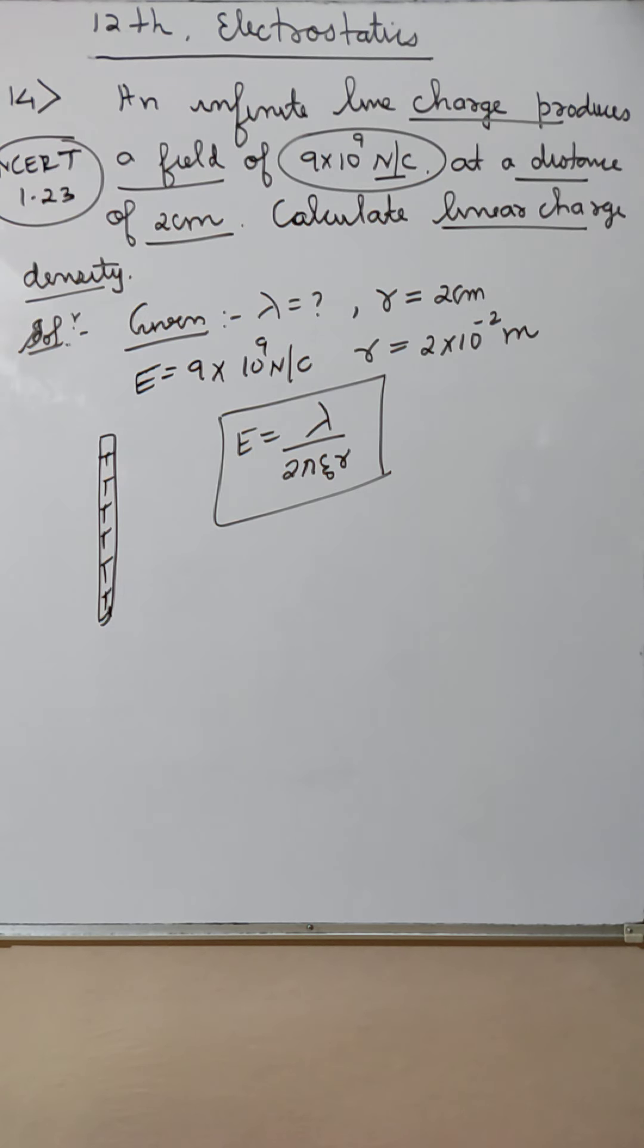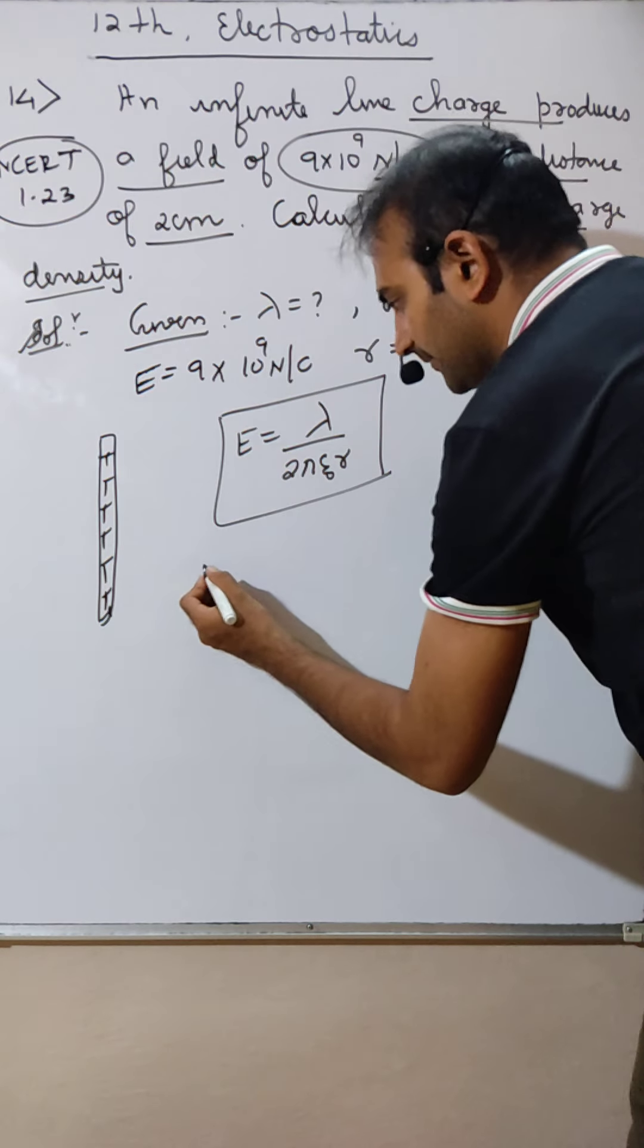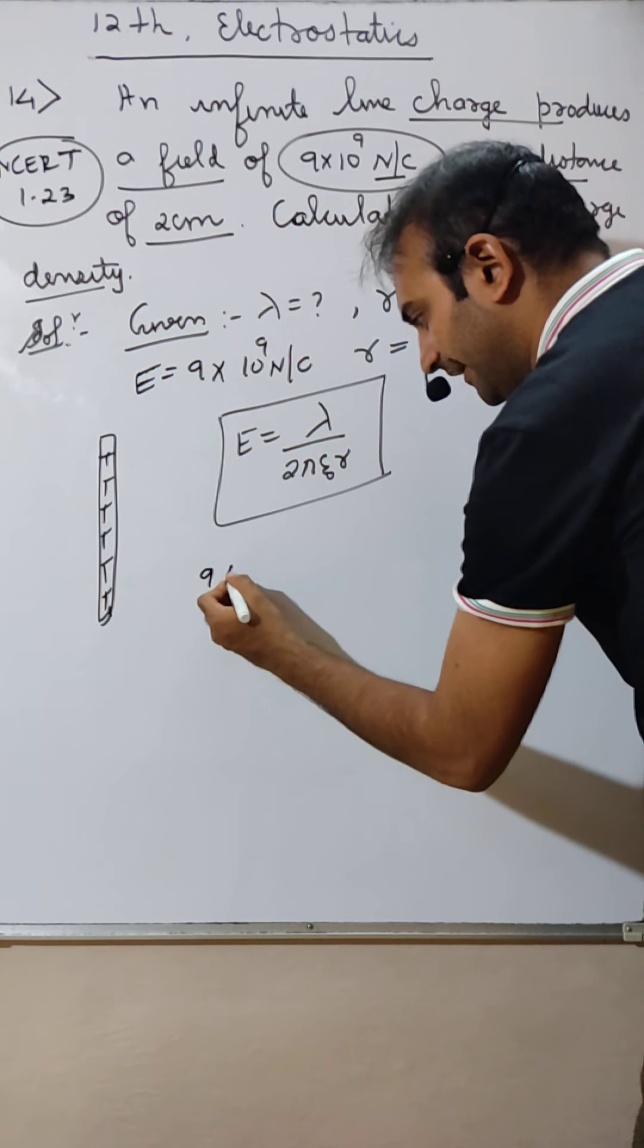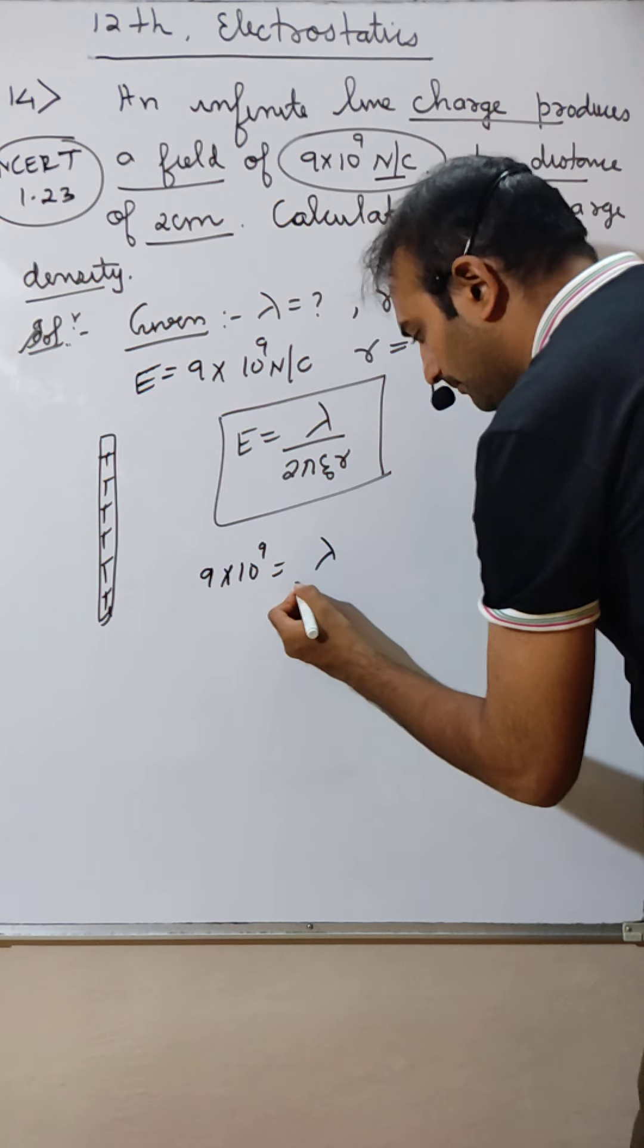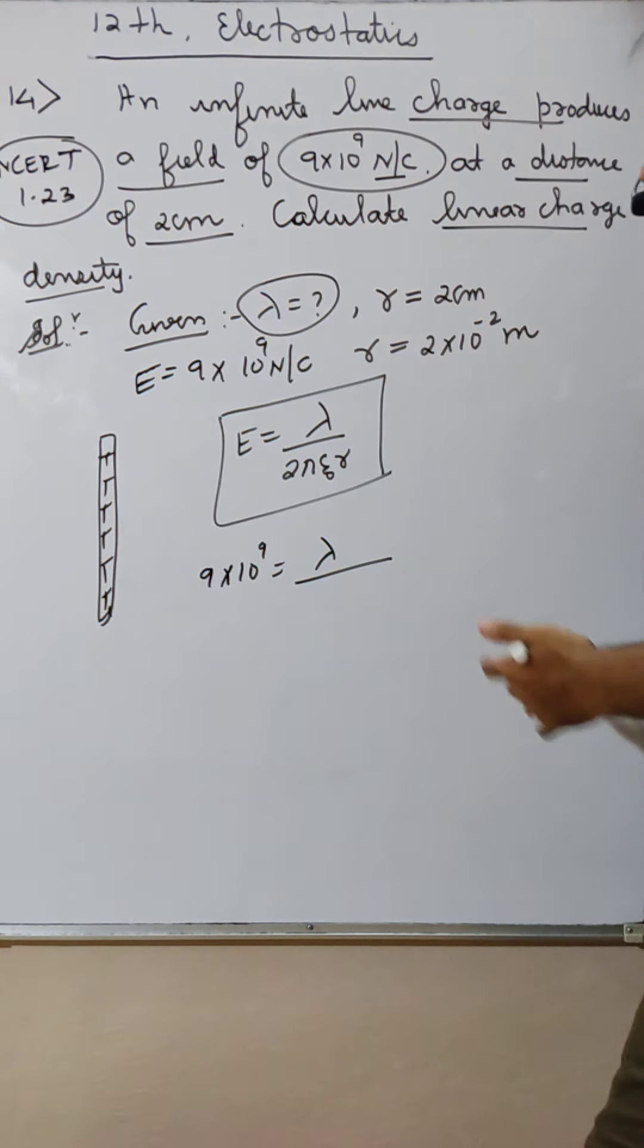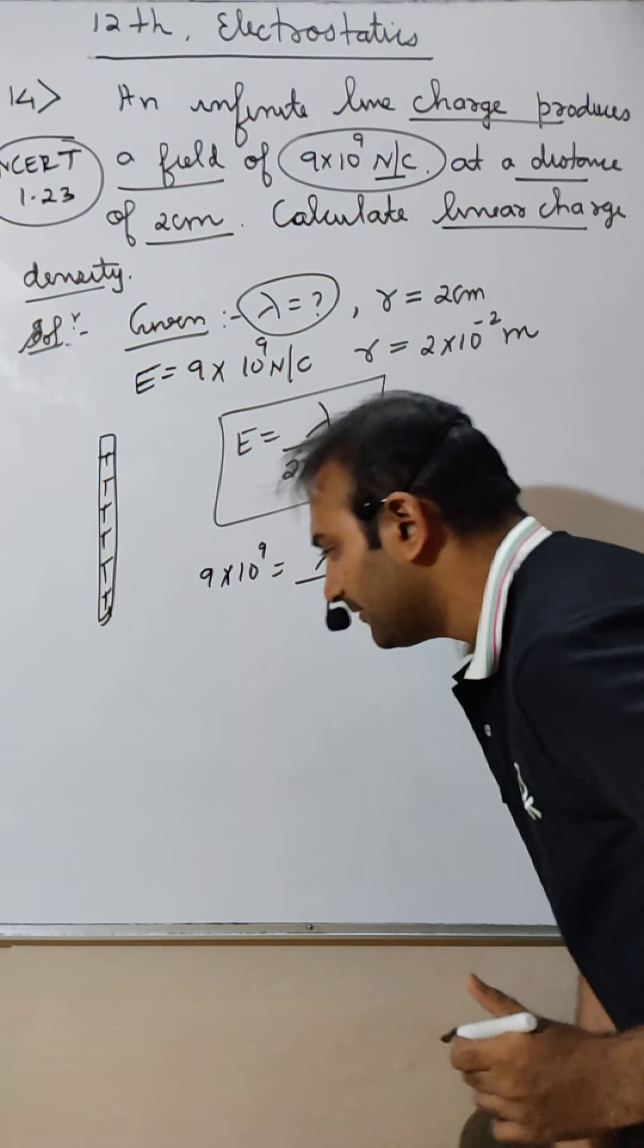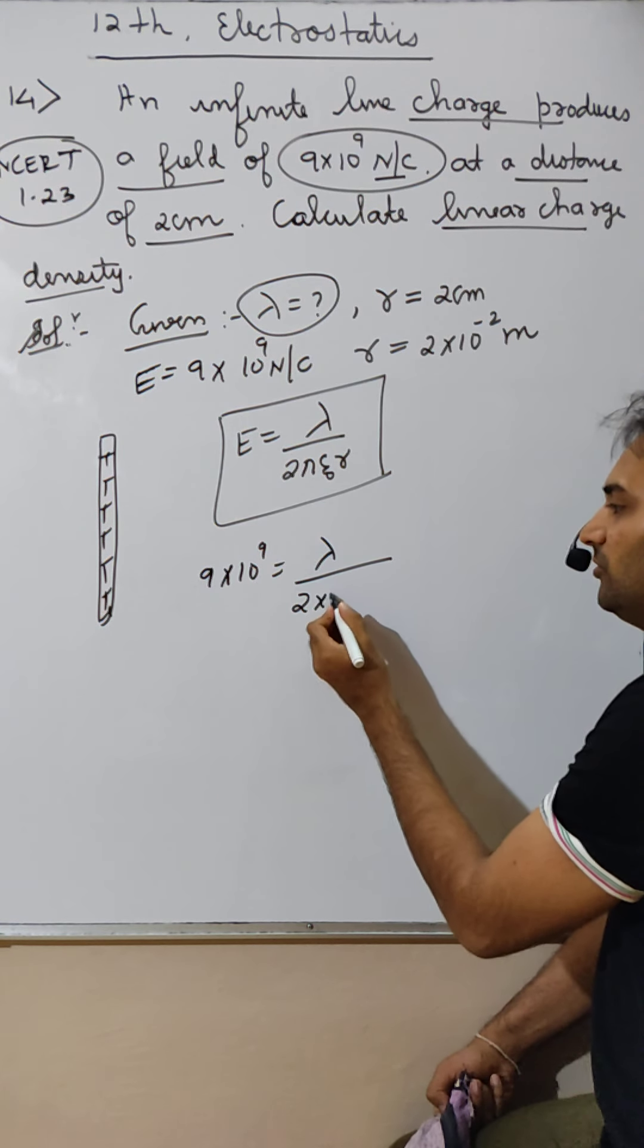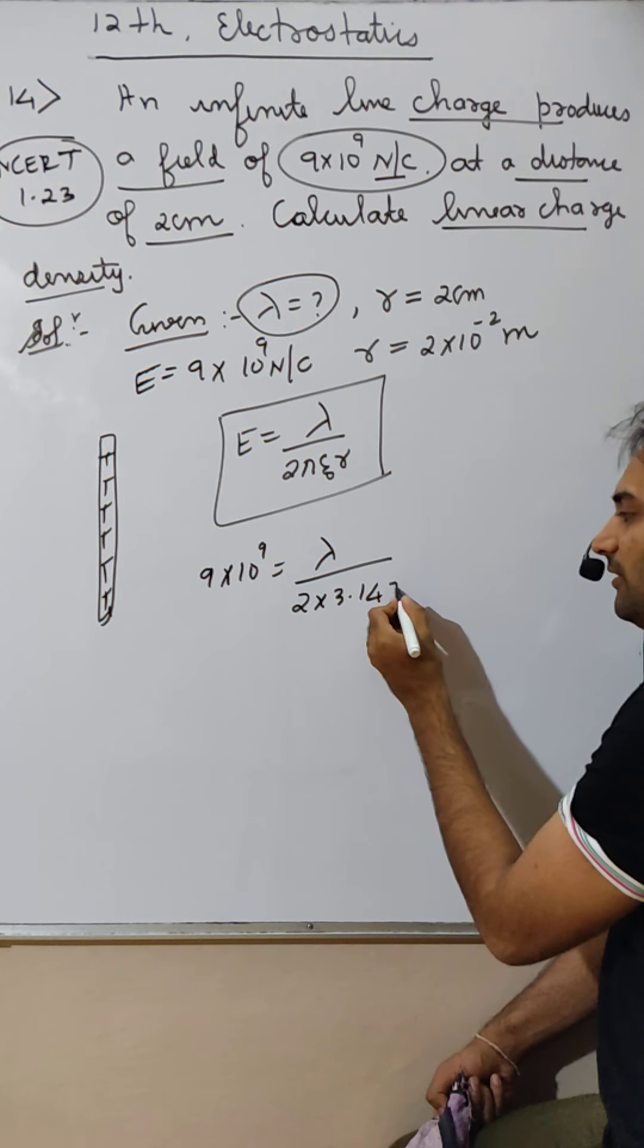Just take calculators and start calculating. Electric field is 9 into 10 raise to 9. Lambda Bhagwan jane. That itself is the interest area.